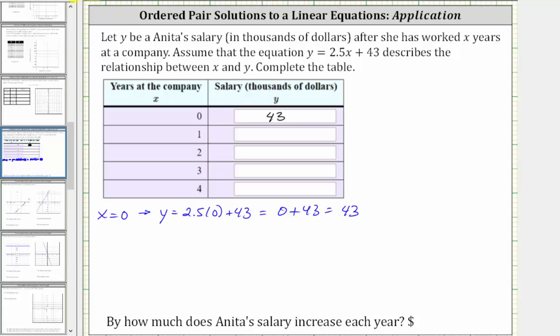Next, we have x equals one. To find the corresponding y value, we substitute one for x, which gives us y equals 2.5 times one plus 43. 2.5 times one is 2.5, and 2.5 plus 43 equals 45.5.